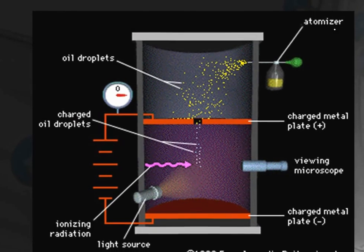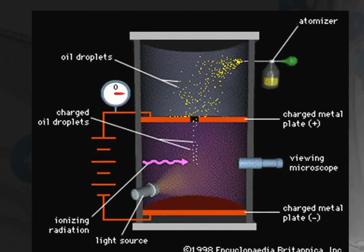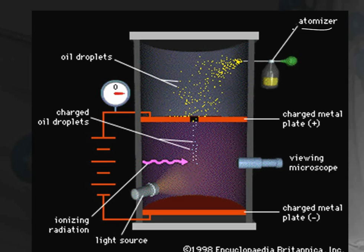So as you could see, this is the experiment which was performed. There was a device known as an atomizer. The atomizer was something like a perfume bottle with a squeezy part. So when we squeeze this part, very tiny, very minute oil particles — oil drops — come out from this atomizer and enter something like the cylinder.